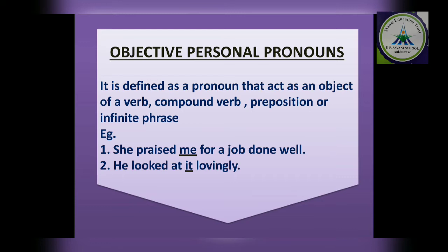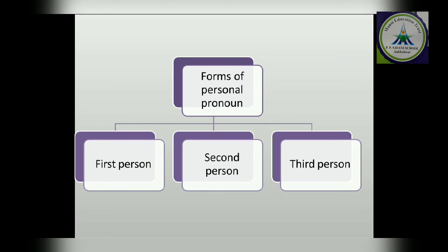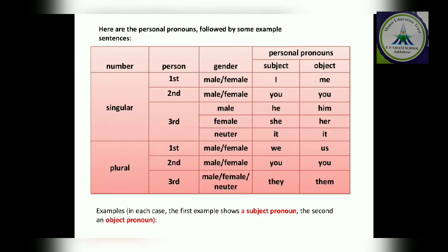So personal pronouns are of two types: subject personal pronoun and object personal pronoun. In personal pronouns we have three persons: first person, second person, and third person. Here I have given you a table. Later I will discuss what first person, second person, and third person are. You have to remember this table for singular or plural, male or female usage.